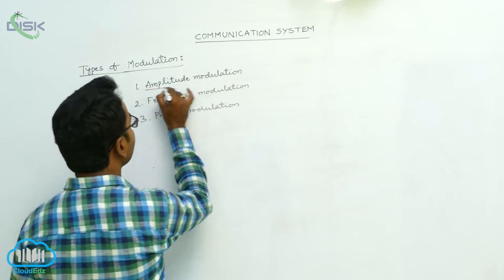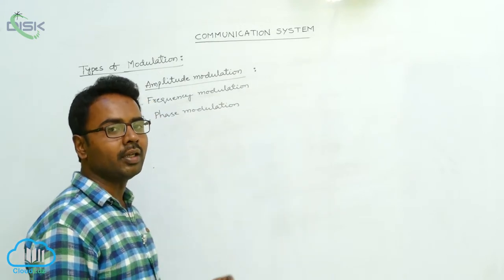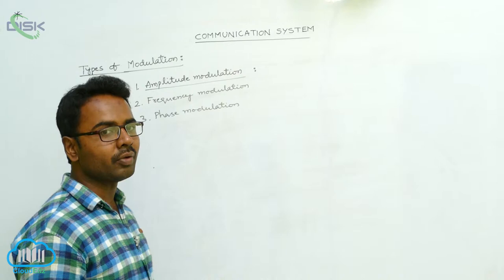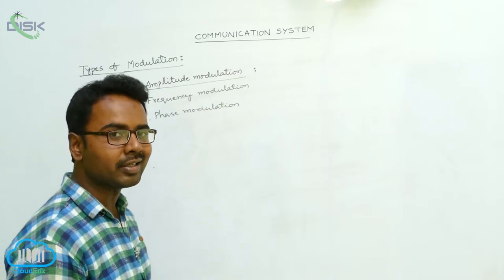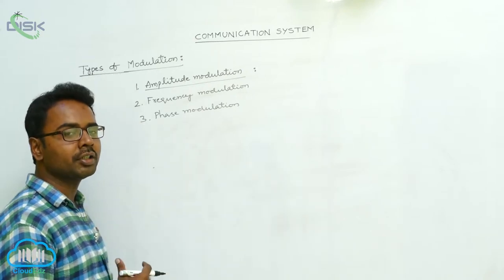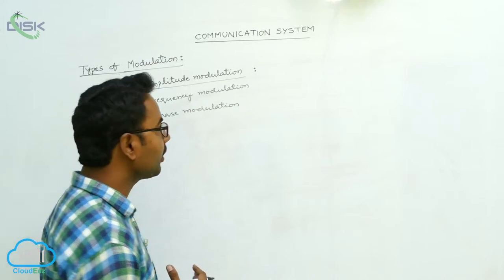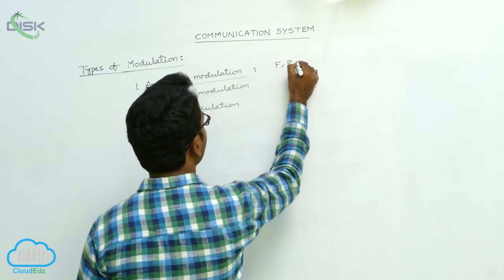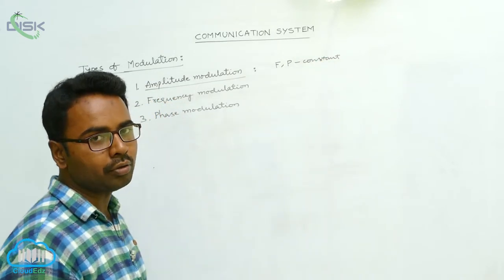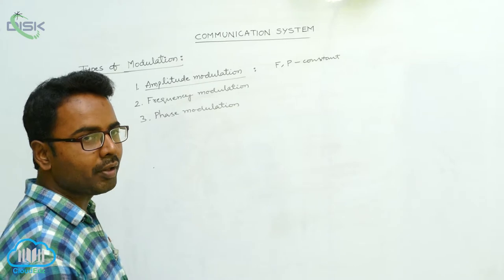Let's see first of all what is amplitude modulation. Amplitude modulation means it is a process of varying the amplitude of carrier signals according to the amplitude of message signals. As the amplitude of message signals varies, the amplitude of the carrier signals also varies accordingly. In amplitude modulation, the frequency and phase are kept constant.